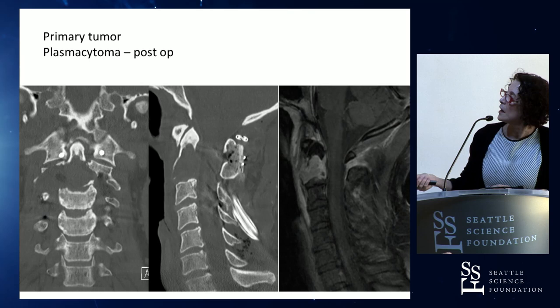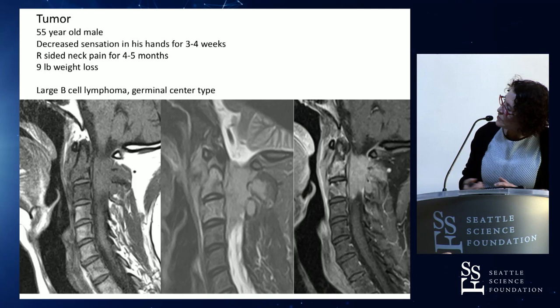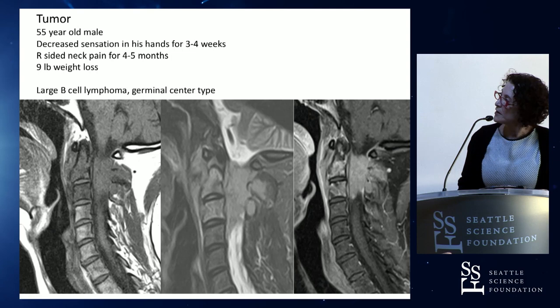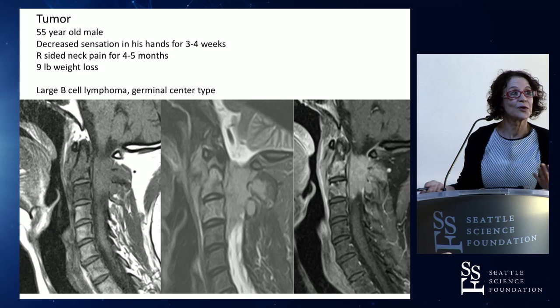Here's another gentleman who came in with decreased sensation in his hands for a few weeks, some neck pain, some weight loss - sounds like a standard cancer presentation. This turns out to be a B-cell lymphoma. The only difference from the other masses is there's maybe a little more bone involvement. The take-home remains: you need both CT and MR, and we're not going to be really good at differentials.